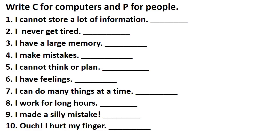Question number 5: I cannot think or plan. Answer is C. Next question: I have feelings. Answer is P, that is people. Question number 7: I can do many things at a time. Answer is C. Question number 8: I work for long hours. Answer is C.